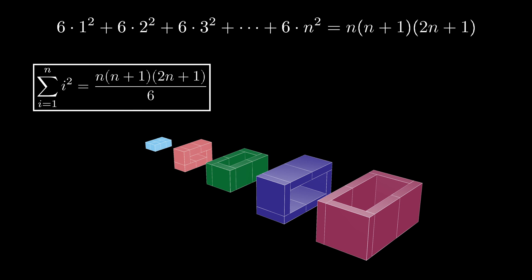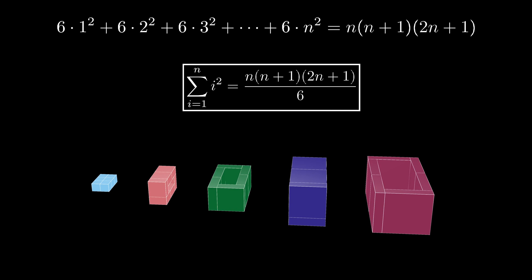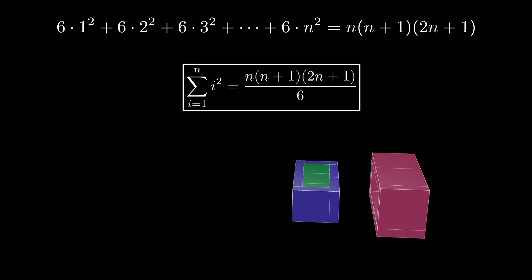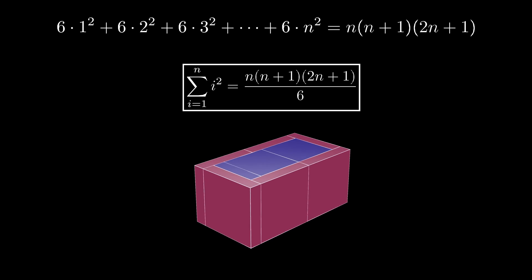To recap, we've just proved the famous sum of squares formula by stacking cuboidal arrays inside of cuboidal shells as shown here. The resulting formula says that the sum of the first n squares is equal to n times n plus 1 times 2n plus 1, all divided by 6.